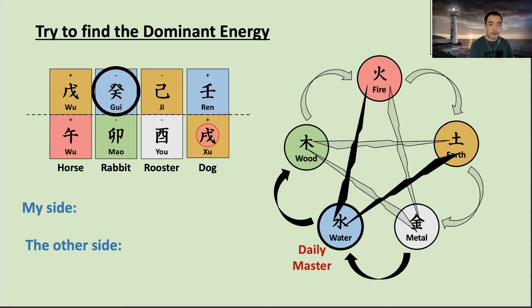Has anybody found the dominant energy or weakness? It looks like there are three earths here, and metal looks a little strong — it is supported by earth and located on the monthly branch. And there are wood and fire here.